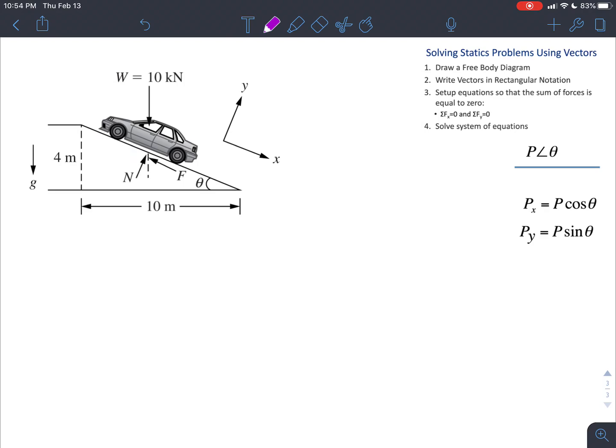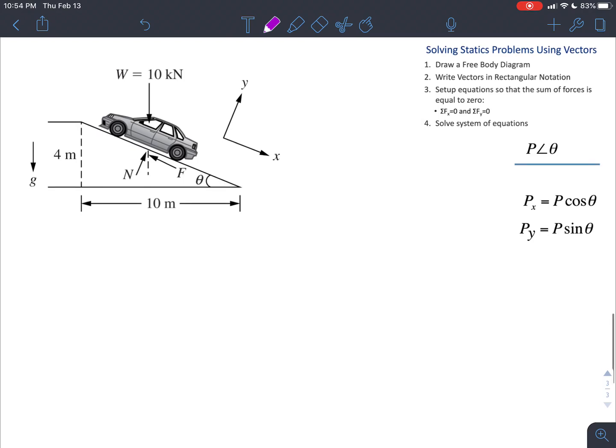The forces that we have, starting with our first step of drawing a free body diagram. We have the car, which we see here, we have a weight, which is 10 kilonewtons.